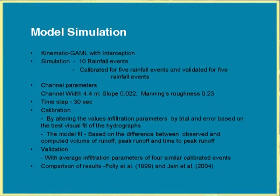For model simulation, 10 rainfall events were considered. Since the dataset has uncertainties, 5 rainfall events were used for calibration and 5 for validation. Channel parameters used: channel width 4.4 m, slope 0.022, Manning's n 0.23, time step 30 seconds. Calibration was done by altering the values of infiltration parameters by trial and error, or using optimization techniques, based on the best visual fit of hydrographs — comparing observed and computed runoff volume, peak runoff, and time to peak. A thorough calibration is required for infiltration parameters since they depend on what is happening in the soil.